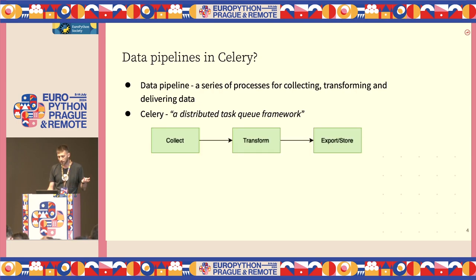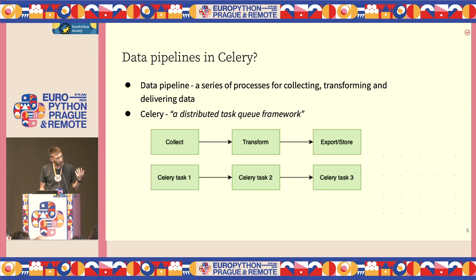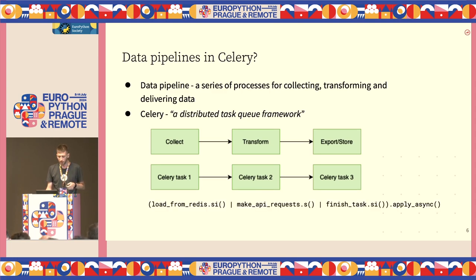If we visualize a data pipeline in its most basic form, it would look something like this: three steps connected in a series where we collect, transform, and export or store some data. When talking about data pipelines and Celery, we're essentially talking about chains — chaining tasks into a series that execute some work. Here's a small code example of how we define it.